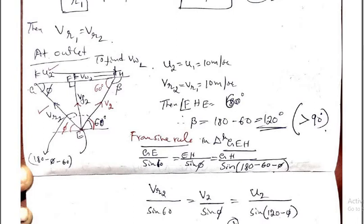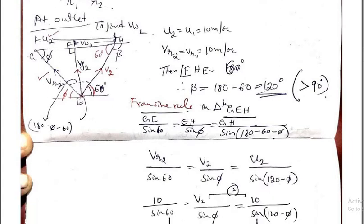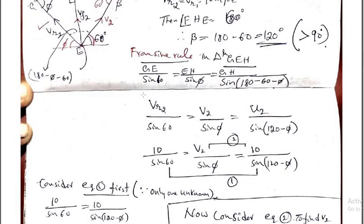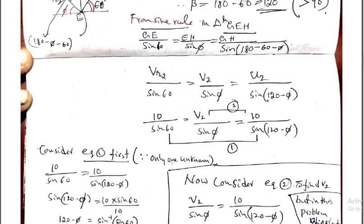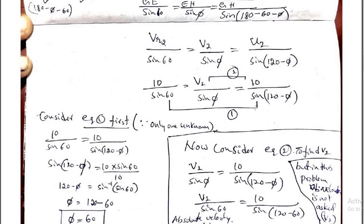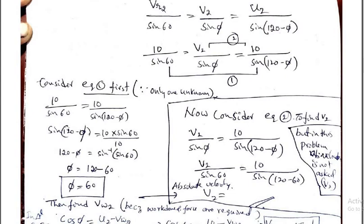Now I will use the sine rule for triangle GEH. So Vr2 divided by sine 60 equals V2 divided by sine (120 minus phi) equals U2 divided by sine phi. We know Vr2 and U2, but V2 is unknown. So consider any two terms where only one is unknown — that is equation 1. Cross multiplying: sine (120 minus phi) equals 10 times sine 60 divided by 10. So 120 minus phi equals sine inverse of this value, giving phi equals 60 degree.